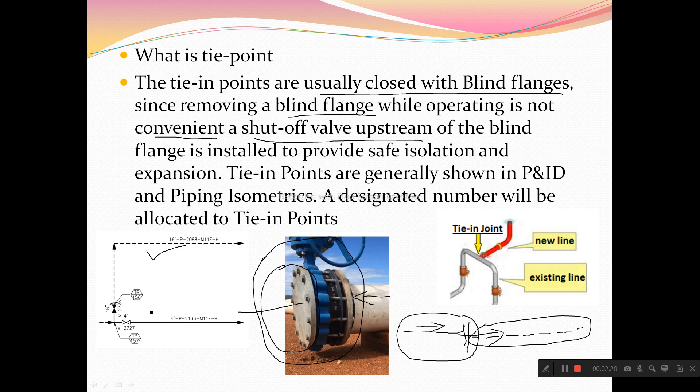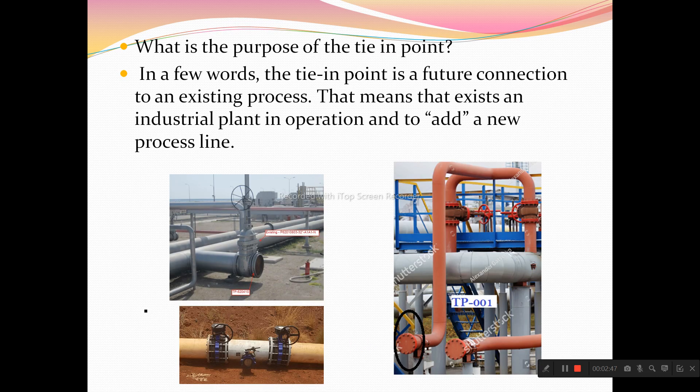At that time the new line was not there — there was only a valve and a blind flange. When you are getting a new line in the future, you connect it to your existing plant which you made previously, maybe five or ten years back. Now you need some new lines, a new process to be added into that line.